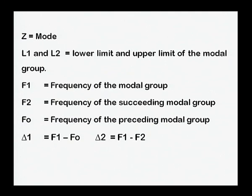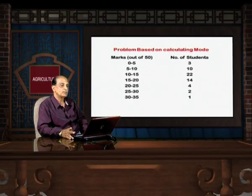Now, z here means the mode, and L1 and L2 refer to the lower limit and upper limit of the modal group. F1 refers to the frequency of the modal group and F2 is the frequency of the succeeding modal group, and F0 is the frequency of the preceding modal group. Delta1 is equal to the difference of F1 and F0, and delta2 is equal to the difference of F1 and F2.